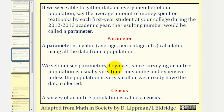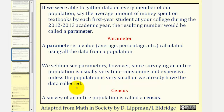We seldom see parameters, however, since surveying an entire population is usually very time-consuming and expensive, unless the population is very small or we already have the data collected. A survey of an entire population is called a census.